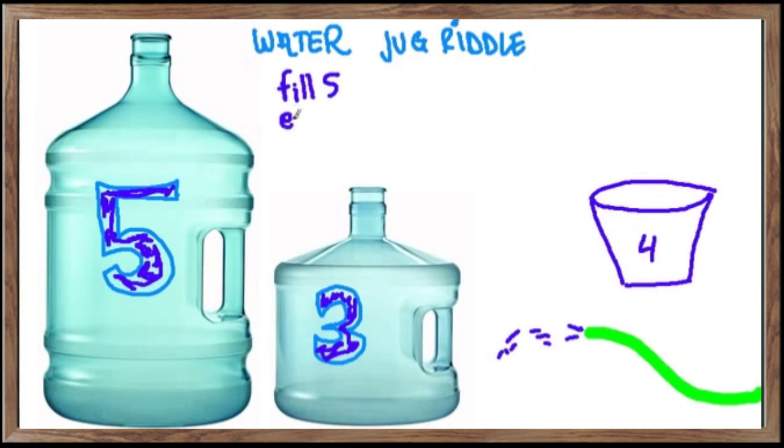So first, I would fill the five-gallon jug. I would empty the five into the three-gallon jug. And now I want to keep track of what's happening here. Now there's two gallons in the five-gallon jug. And what can I do next? Well, next, I'm going to pour those two gallons into the three-gallon jug.